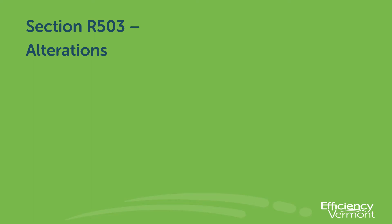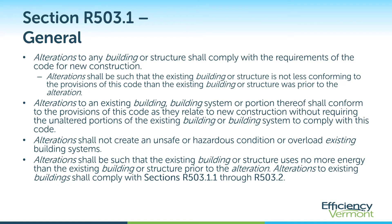Section R503 covers alterations. Similarly to additions, alterations to any building or structure need to comply with the requirements of the code for new construction. Alterations shall be such that the existing building or structure is not less conforming to the provisions of this code than it was prior to the alteration, and consequently uses no more energy than the existing building or structure did prior to the alteration. Alterations to an existing building, building system, or portion thereof shall also meet the requirements of the code for new construction, without requiring the unaltered portions of the existing building or building system to comply with the code.